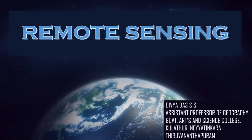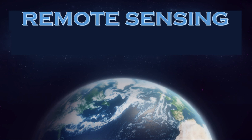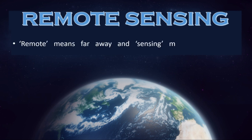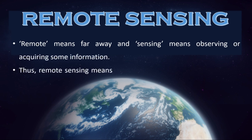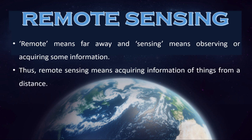Hello everyone, welcome to the video sessions on remote sensing. Today we are going to learn about the basic concepts of remote sensing. The term remote sensing is a combination of two words: remote and sensing. Remote means far away and sensing means observing or acquiring some information. Thus, remote sensing means acquiring information of things from a distance.